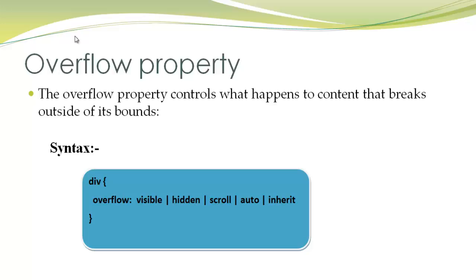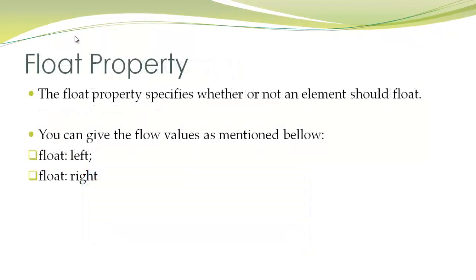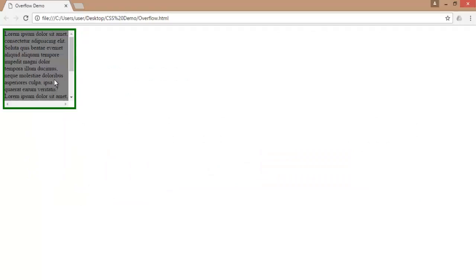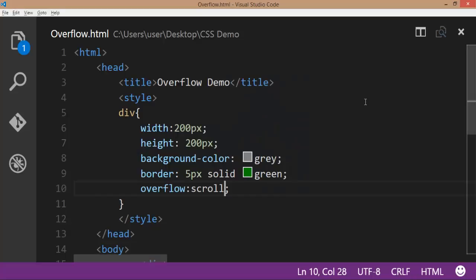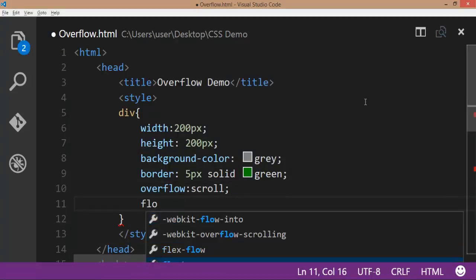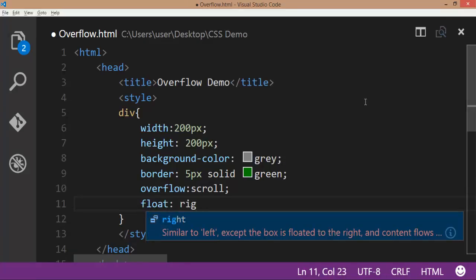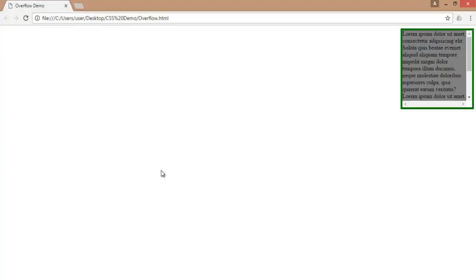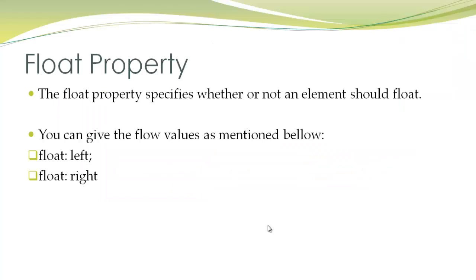By default it is visible; we can give it as hidden, scroll, or auto — according to the text content it will give scrollbars — and we can also inherit these properties. Next we have a property called float. Float accepts two values: left and right. For example, if I want to display this div at the right side, I can use the property float right. By default it is left. Save the file, go to the browser, refresh. Here you can observe that the div tag is displayed at the right side. You can apply this float property to any HTML elements.